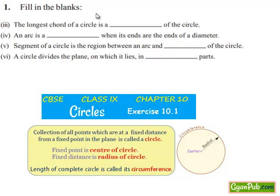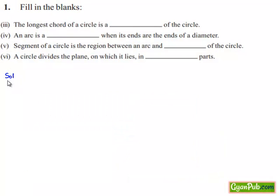Moving on to the first question: fill in the blanks. Now let us find the solution for the 3rd, 4th, 5th and 6th blanks. Initially, let us consider the 3rd blank. The longest chord of a circle is a blank of the circle.